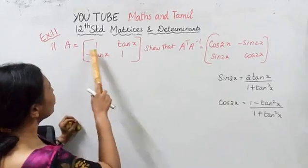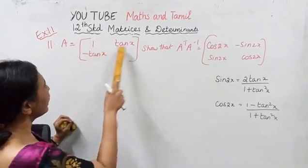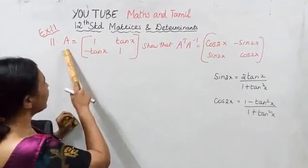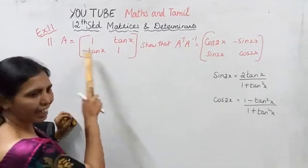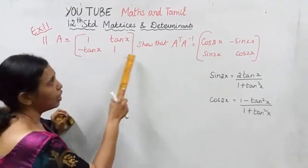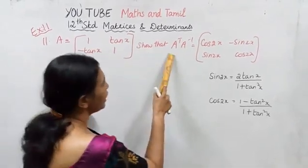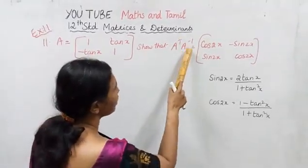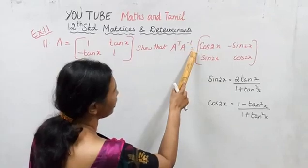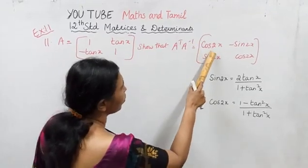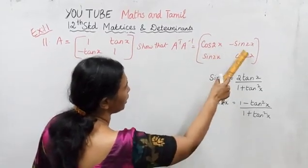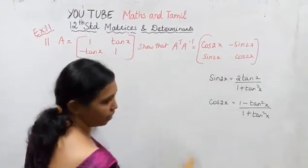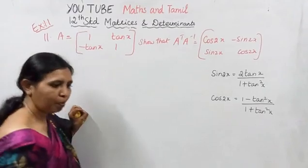A is equal to 1, tan x; minus tan x, 1. Given matrix A, show that A transpose into A inverse equals cos2x, minus sin2x; sin2x, cos2x. This is how to prove.